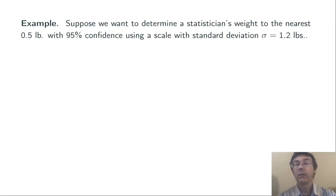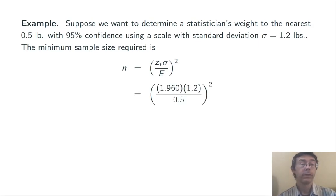Let's do an example. Suppose we want to determine a statistician's weight to the nearest half pound with 95% confidence using a scale that has a standard deviation of 1.2 pounds. So, not the most accurate scale in the world. How many times do we have to actually weigh the statistician? The minimum sample size required is going to be given by that formula, which we can now just plug into. With 95% confidence, we have a z* of 1.960. I've also plugged in σ = 1.2 and margin of error E = 0.5.